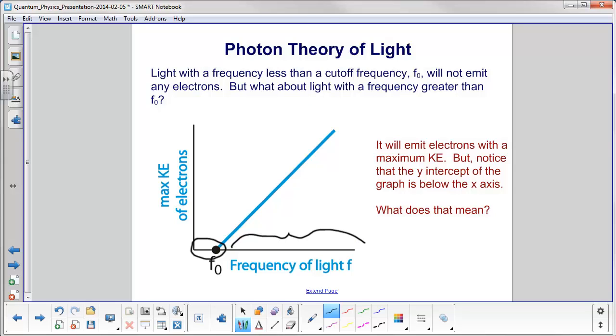But notice, where is the y-intercept of this line right here? Well, let's just extend it here. And we can see that it's intercepting the y-axis at a point less than zero. It's below the x-axis. What do you think that means?